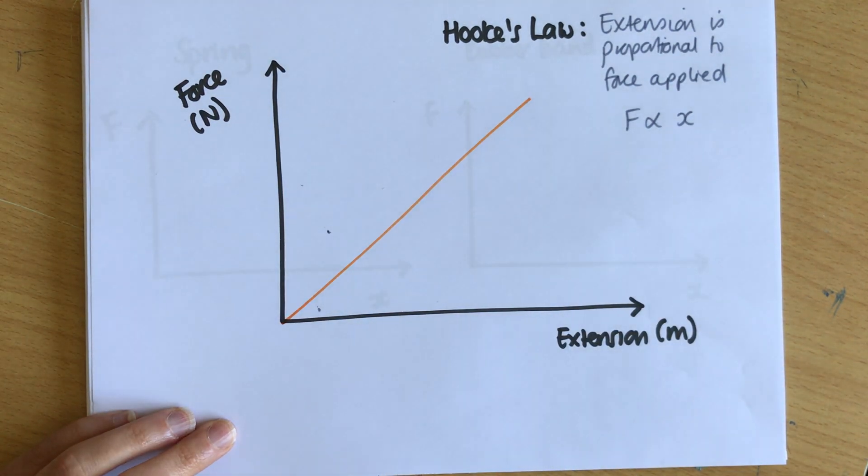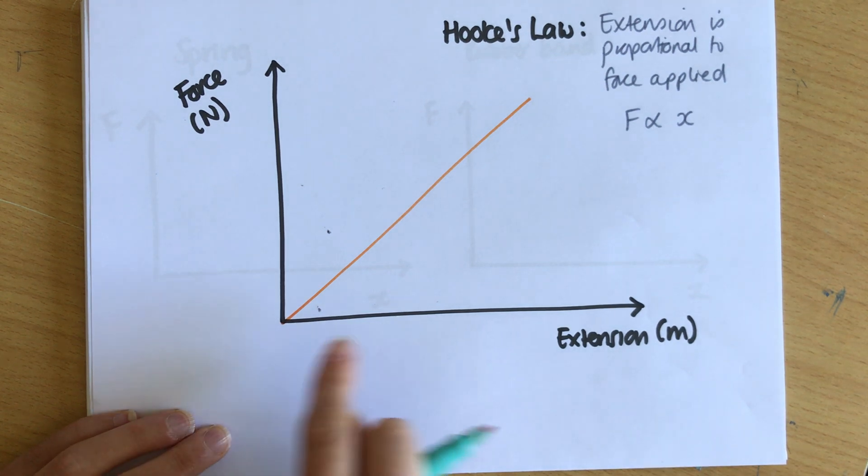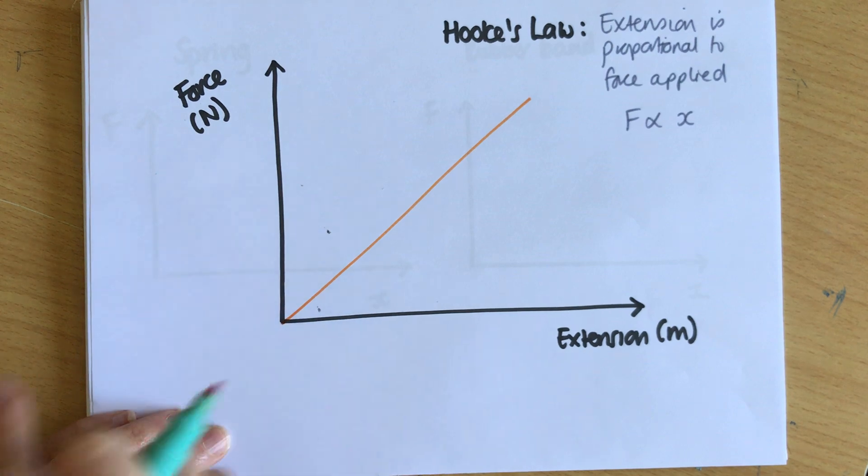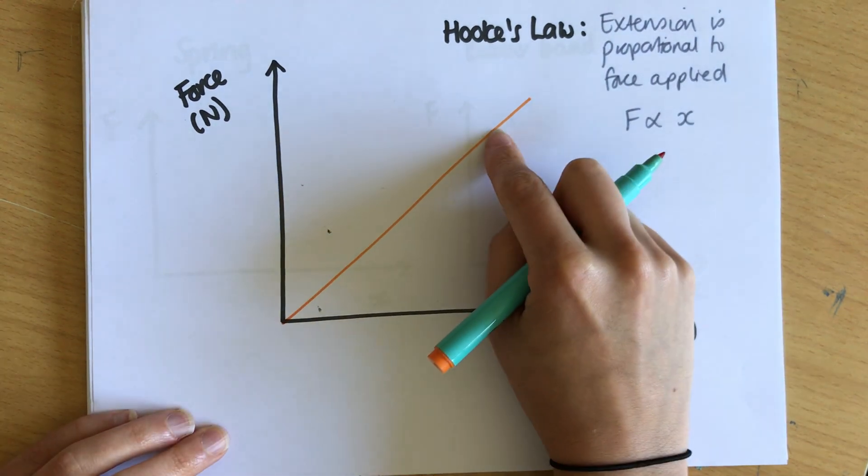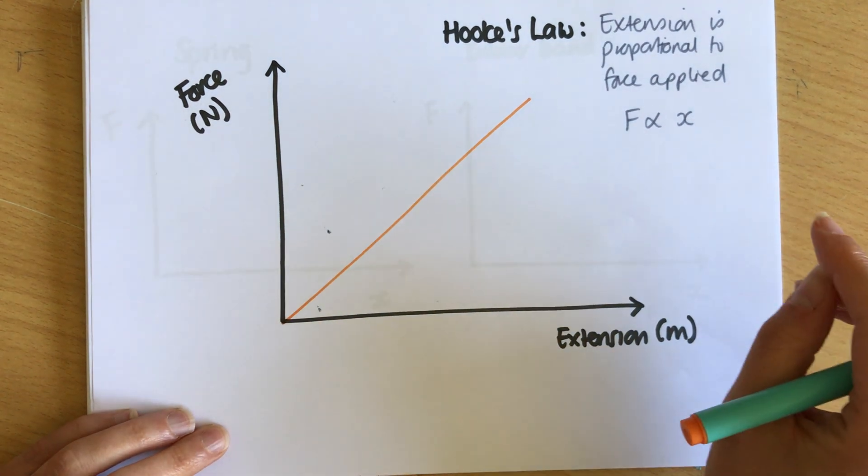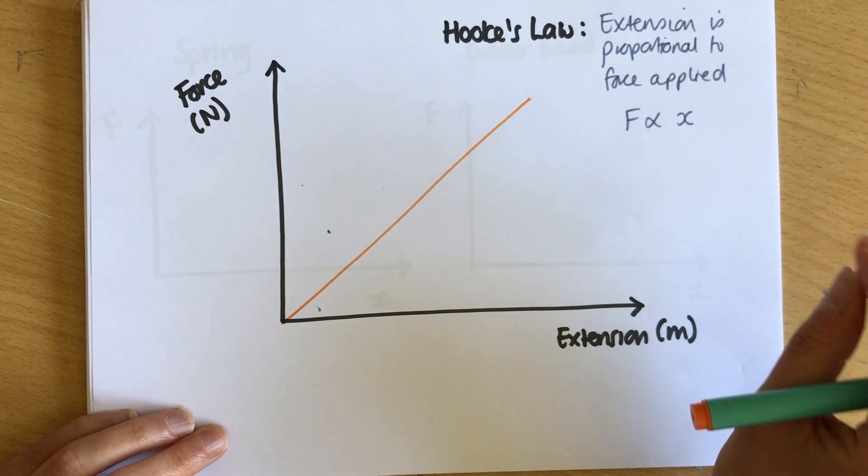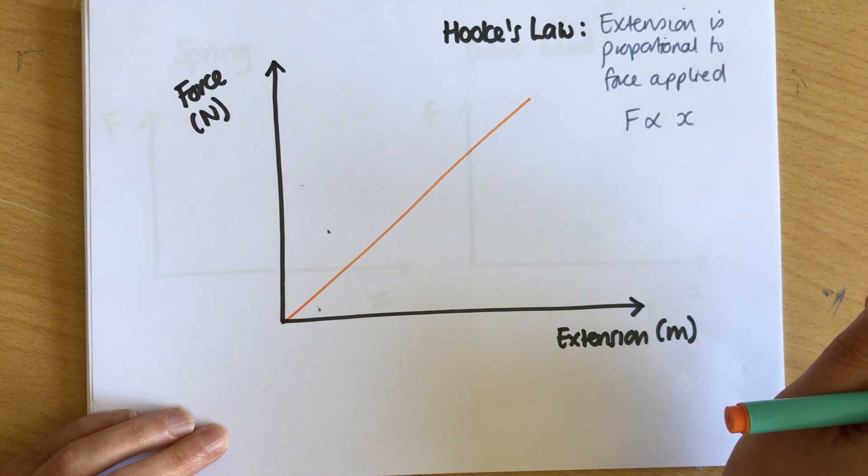When you do the core practical with the springs and masses being added on, if you plot the extension against the force added—how many masses in newtons that you've added on—you should get a straight line because for a spring it does obey Hooke's law to an extent. We'll talk about that extent in a moment.